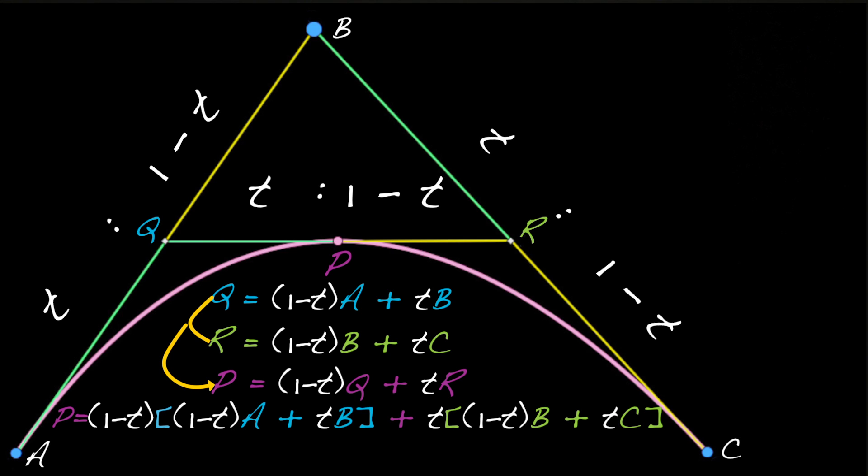Multiplying out the terms and collecting, I can rewrite P as P equals 1 minus T squared times A plus 2T times 1 minus T times B plus T squared times C.